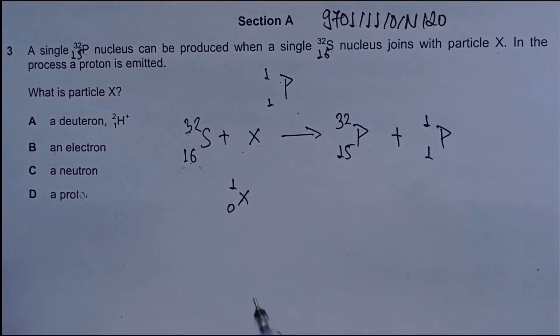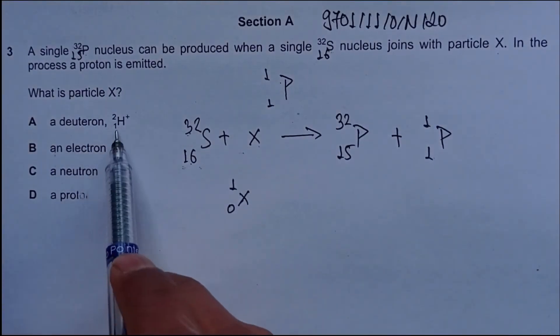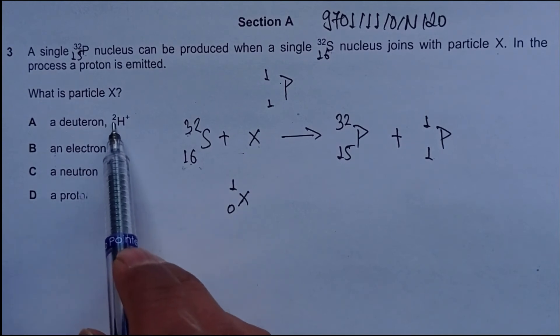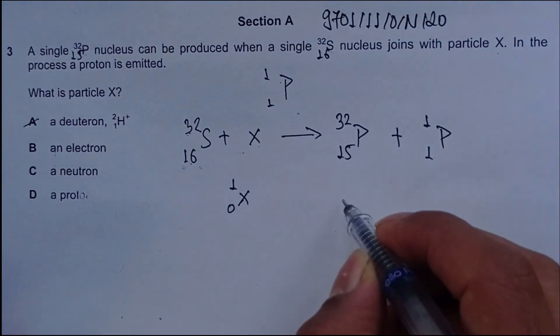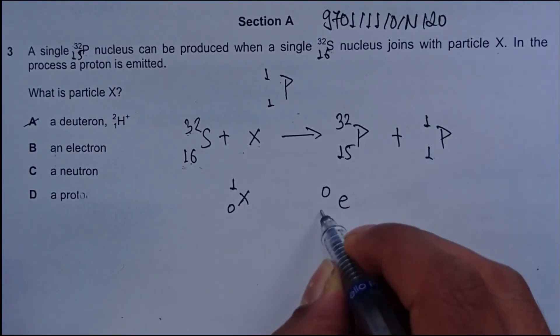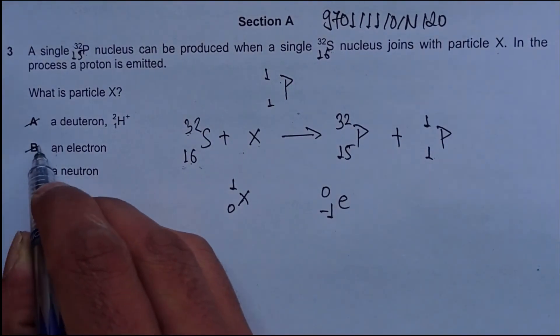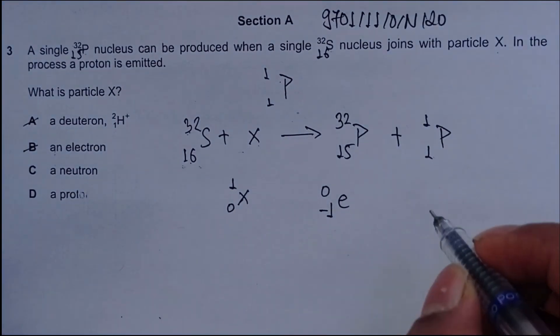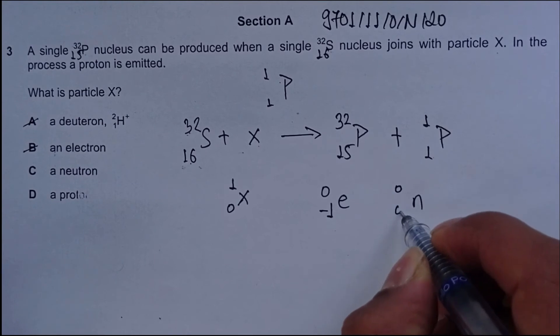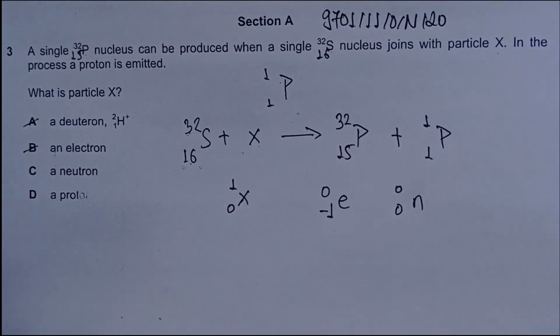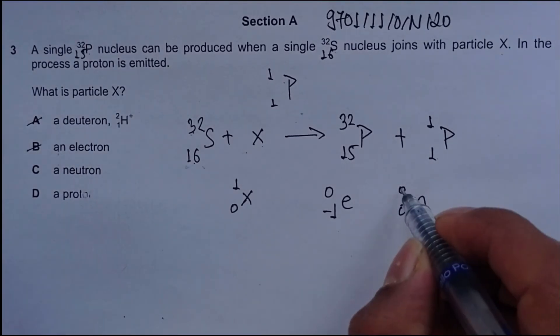So X should have 0 protons and 1 nucleon, or 1 neutron. X will definitely not be deuterium. Deuterium has 2 nucleons and 1 proton. Electron is 0 nucleons, minus 1 proton, definitely not B. Neutron has 1 nucleon and 0 protons.